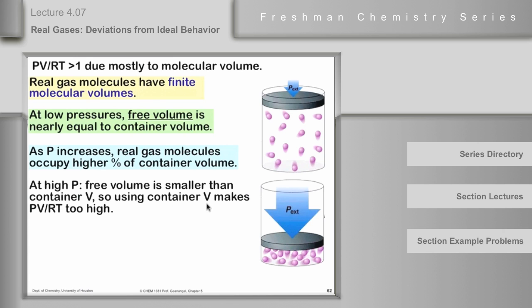So using the container volume makes PV over RT too high because the container volume is actually larger than the real free volume that's available. When you subtract the container volume, you take the container volume and subtract the volume of the molecules. You may think that the volume of molecules is too small for that to be an important factor. But if there are big molecules, and there are lots of them, high pressure here, then it can be a difference. So that would make PV over RT greater than one at a given pressure and at a given volume and temperature.